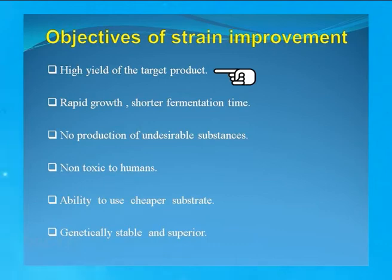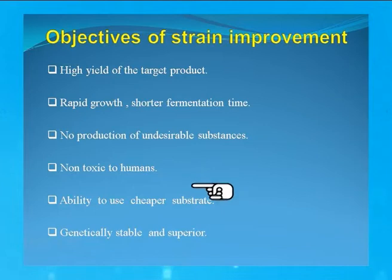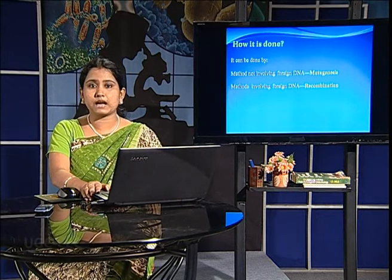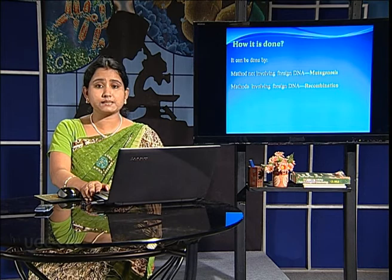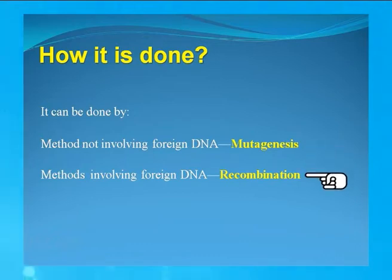The objectives of strain improvement are: to obtain a high yield of the target product, rapid growth and shorter fermentation time of the microbe, no production of undesirable substances, the microbe should be non-toxic to humans, the ability of the microbe to use cheaper substrates, and genetic stability and superiority of the microbe. Strain improvement is done by two methods: number one is mutagenesis, in which no foreign DNA is involved, and number two is recombination, in which foreign DNA is involved.